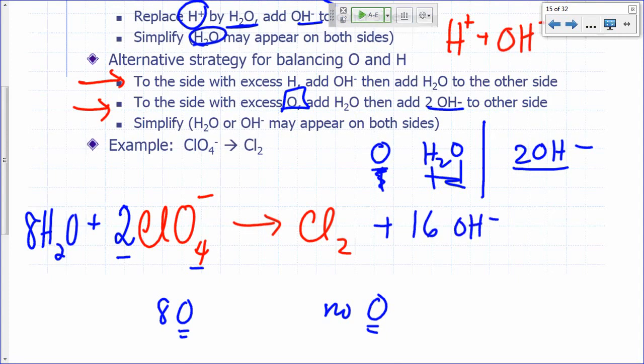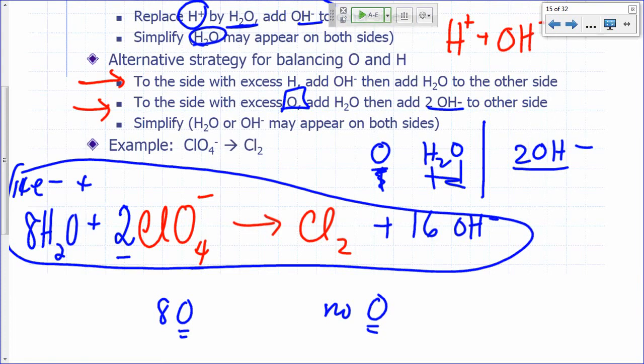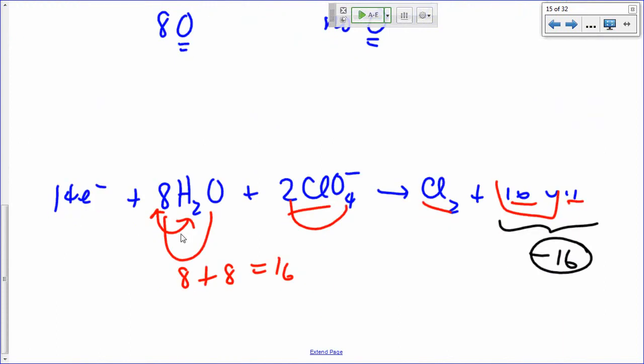And then the final step, you have to balance your charges, and you'll find that you're going to have to add 14 electrons to this side. And that's the same balanced half reaction we saw earlier. So that's how it's done. Same thing right here.